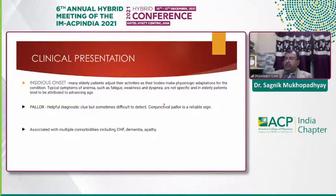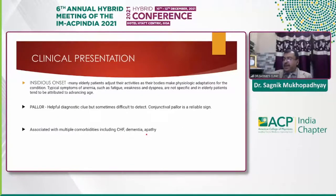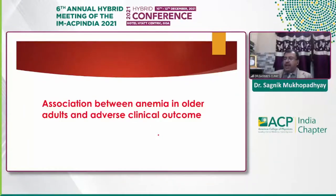In elderly patients, symptoms tend to be attributed to advancing age and comorbidities like arthritis, rheumatological disease, or senescence. Pallor is a helpful diagnostic clue but difficult to detect in patients with dark skin; conjunctival pallor is a more reliable sign. Association with multiple comorbidities including CHF, dementia, and apathy makes nutritional anemia more likely in these patients.